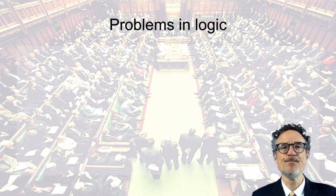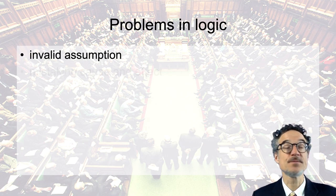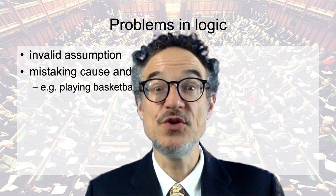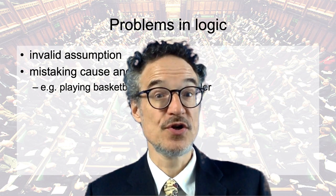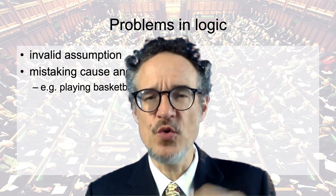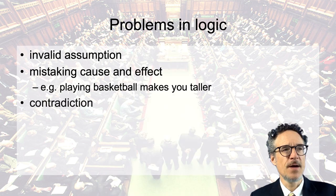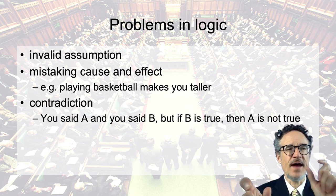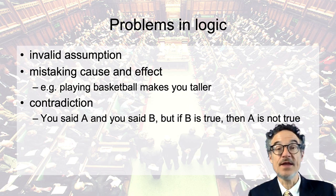There are often problems in logic, such as invalid assumptions. Another common problem is mistaking cause and effect. For example: playing basketball makes you taller — look at all these basketball players, they're all very tall, so it must be because playing basketball makes you taller. I don't think so — I think people who are tall are good at basketball. So cause and effect are often mistaken. Also listen for contradictions — people often say two different things. If A is true and they also said B, but if B is true then A is not true, they've contradicted themselves.